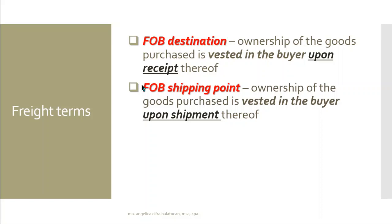Goods that are shipped in transit — meaning while the goods are traveling — who is the owner of the goods while they are in transit? If it's FOB destination, the ownership will be vested in the buyer upon receipt, meaning when the goods arrive at the destination which is the buyer's location. So while the goods are still traveling to the buyer, the owner is still the seller.